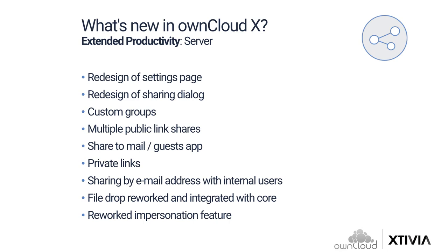The former files drop app is now integrated with the OwnCloud core, becoming a basic part of OwnCloud. OwnCloud also improved it in correspondence with multiple public links. The user interface was moved from personal settings to a checkbox in the public link sharing dialog. By using these checkboxes, you can now make every folder a drop folder instead of only one per user, as it was previously. Thanks to multiple public links, you can use those selectively for the same folder — for example, one link with file listing permission read-only, and another as a file drop link.